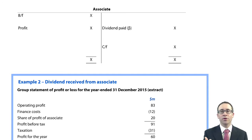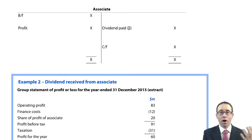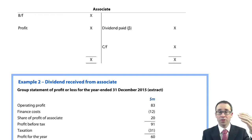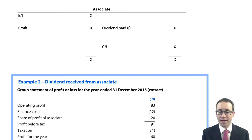So we equity accounted for it, which meant that we had one line item in the SFP — investment in associate — and one line item in profit or loss and other comprehensive income as share of profit of the associate in profit or loss, and share of other comprehensive income further down.